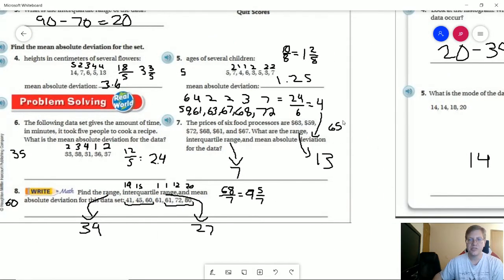For number seven, our mean was 65. So here are all the values for that. We end up with 24 for our deviation divided by six data points, which gives us a mean absolute deviation of four.